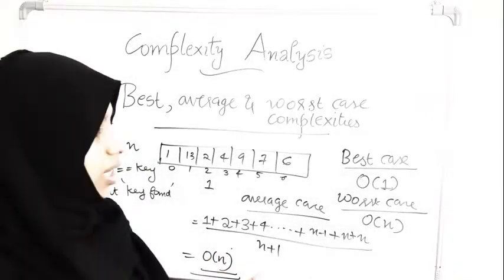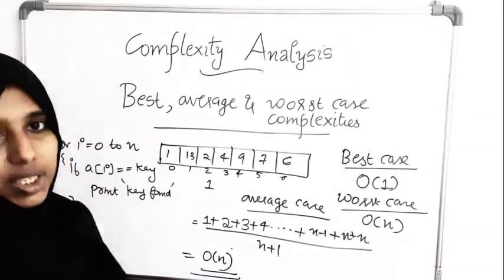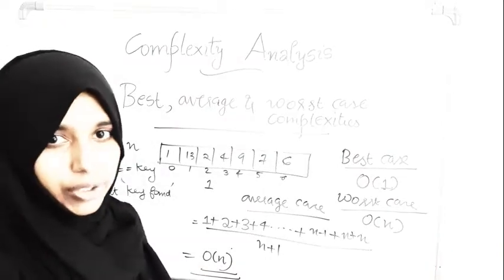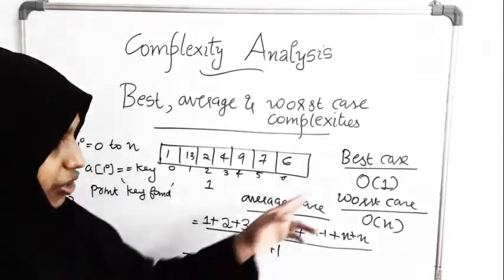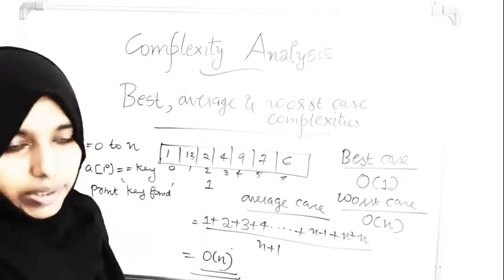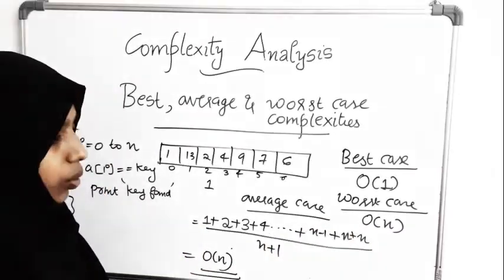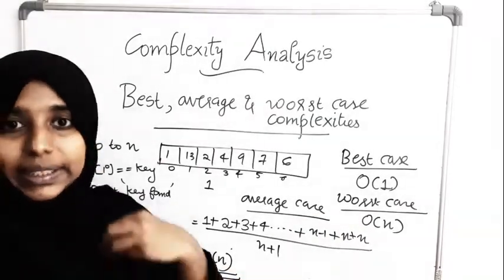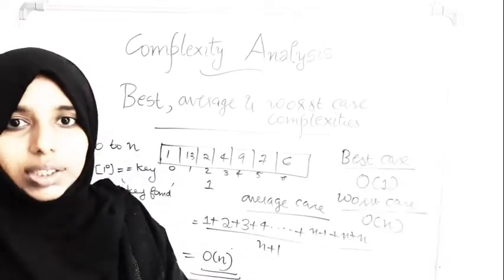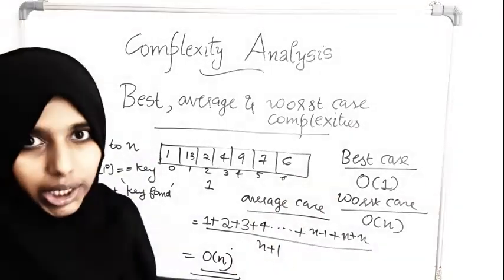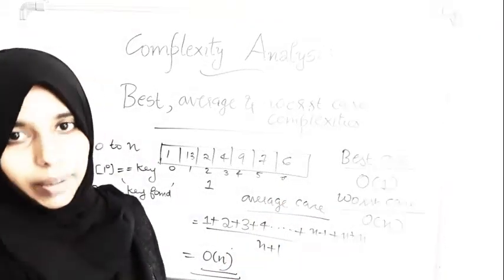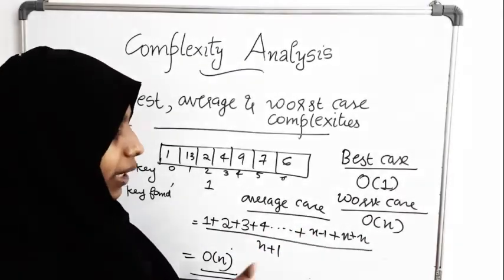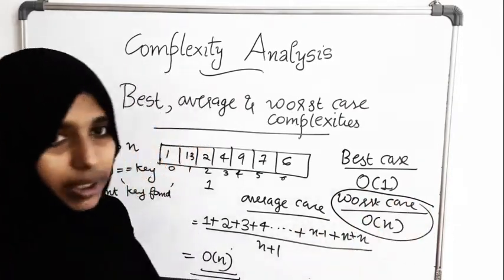Best case is when the algorithm converges to the answer the fastest. Worst case is the maximum time taken by the algorithm to run to completion. Average case is the average time taken. When we compare algorithms, we usually compare worst case complexity, because it guarantees that the algorithm will not take more than that amount of time. Best case is not a guarantee — it only says the minimum time. So when analyzing algorithms, we always take worst case complexity to compare them.